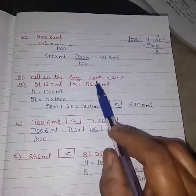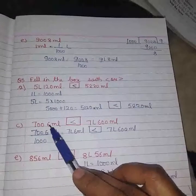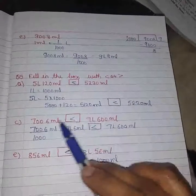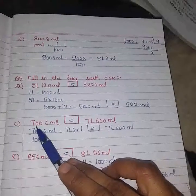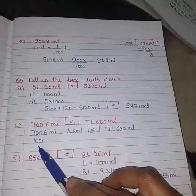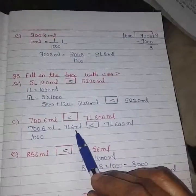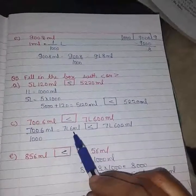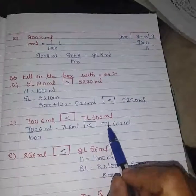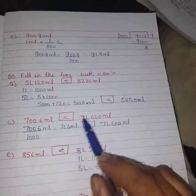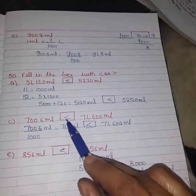Next is 7006 ml and 7 liters 600 ml. So convert this. When we divide this by 1000, the answer is 7 liters and 6 ml. So 7 liters and 6 ml, and here is 7 liters and 600 ml. So this one is bigger, so this is bigger than this number.